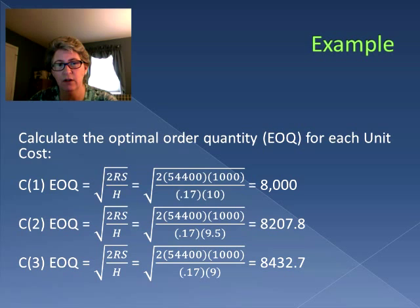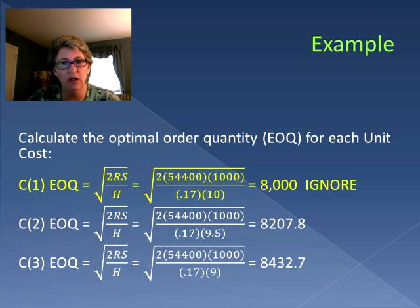Now we compare them with the quantities needed for those prices. For the first one, we only get a $10 cost if we have less than five thousand units and we're going to be ordering eight thousand, so we ignore this particular EOQ because it uses a $10 cost which we would never incur.